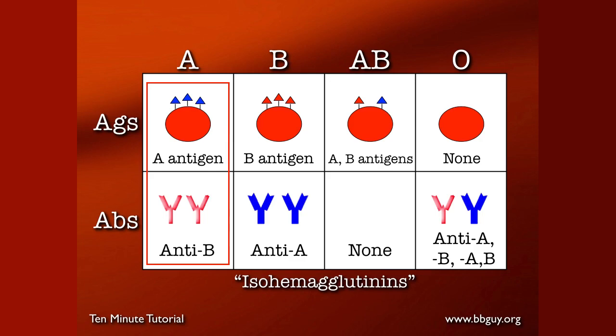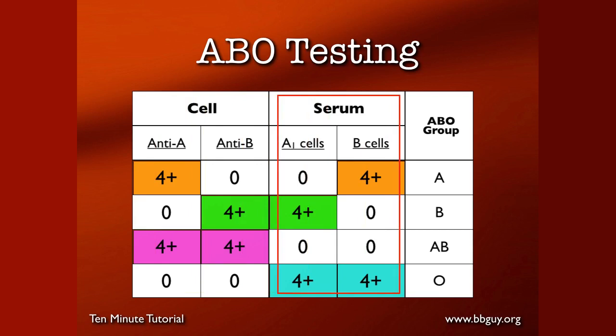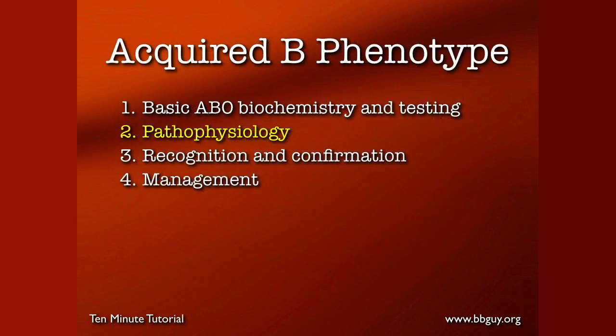Landsteiner's Law can be used to do the routine ABO testing that we do. First, you have the cell grouping, or the forward grouping, or also called the front typing, where the patient's red cells are reacted with reagent anti-A and anti-B. On the other hand, the serum grouping, or the reverse grouping, or most commonly the back typing, takes the patient's serum or plasma and reacts it against reagent A1 cells and B cells. For example, in blood group A, you would expect to see a strong reaction with anti-A on the patient's red cells and no reaction with anti-B. But on the serum grouping, a strong anti-B would give a strong reaction with B cells and not A1 cells.